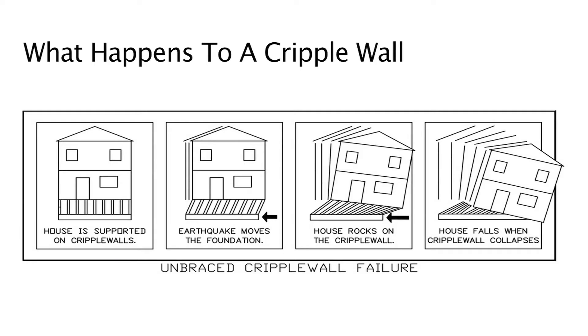Here's an illustration of what happens when a cripple wall collapses. As you can see, when the earthquake rocks the house back and forth, the cripple walls are not able to support the house and keep it from collapsing.